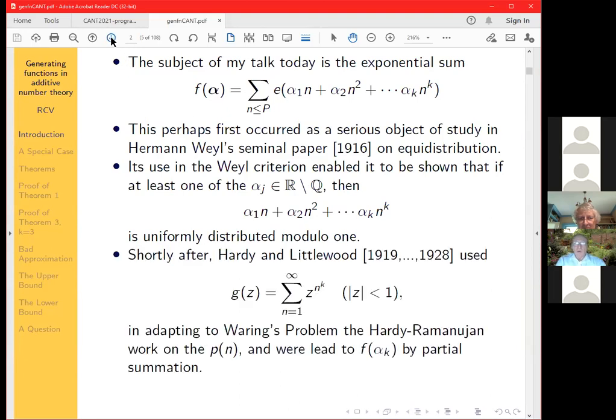And I think probably the first place this ever occurred is in Hermann Weyl's famous paper in 1916 on equidistribution, where you can use this sum to prove that a polynomial of this kind with at least one irrational coefficient is uniformly distributed modulo one. And Weyl's paper also contains a technique for dealing with the exponential sums. And then from that you can, of course, attack the original problem through something which you now call the Weyl criterion.